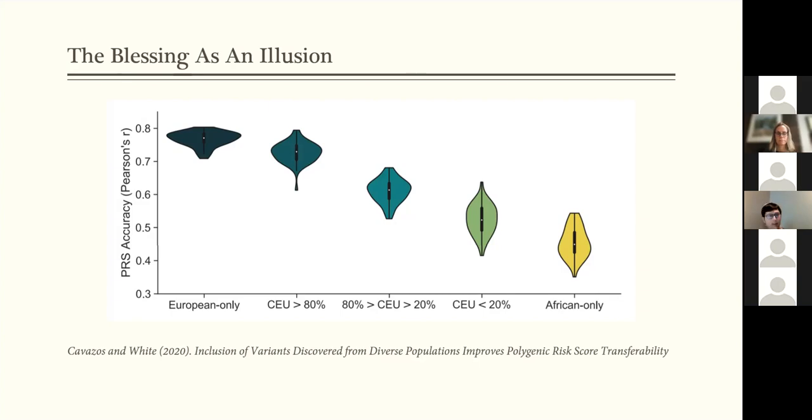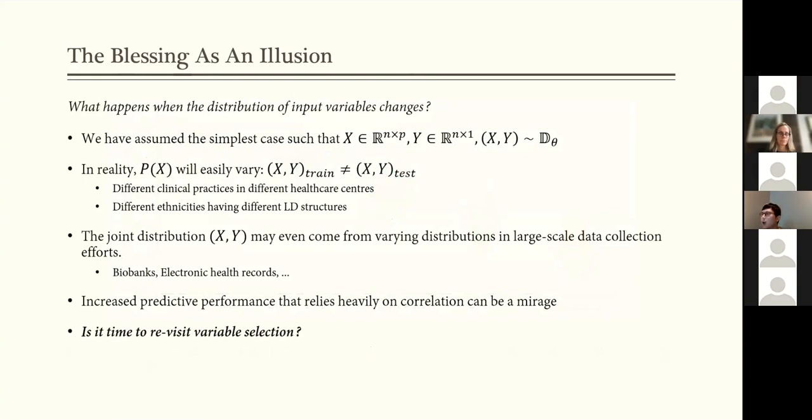So what's happening here exactly? So the idea is that we haven't talked about what happens when the distribution of the input variables change. We assume that X and Y both come from some fixed joint distribution, and it doesn't change, but in reality, they change all the time.